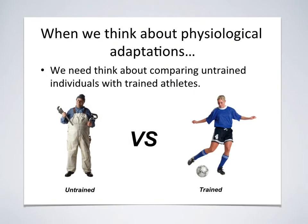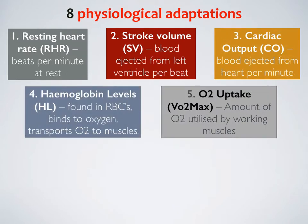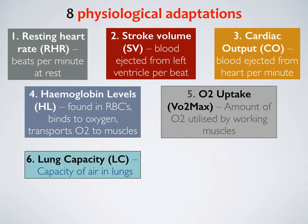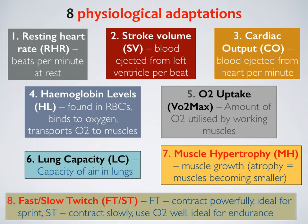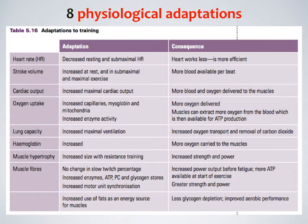It is important to understand that we often compare untrained athletes with trained athletes so that we can analyse and determine the physiological adaptations and the effect on performance. It is also important to know that while there is a physiological adaptation to training, there is also a consequence. For example, as a result of training, heart rate decreases, and what this means as a consequence is the heart works less and the cardiovascular system works more efficiently.